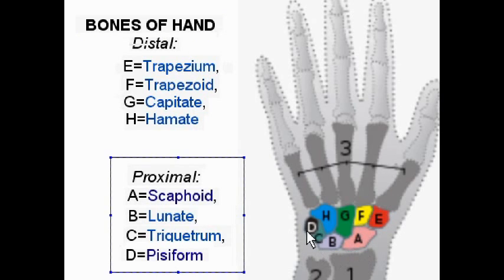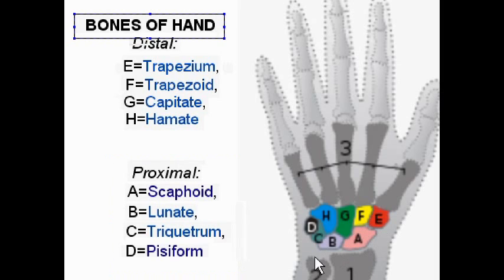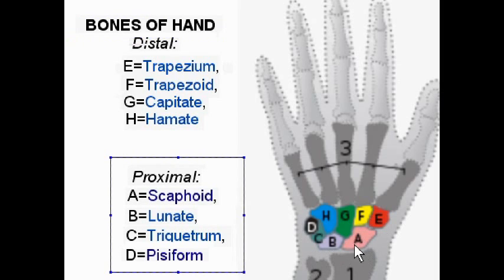Proximal: ABCD. Distal: EFGH. Starting from the bottom row, ABCD, we have the scaphoid, the lunate, the triquetrum, and behind it, the pisiform.